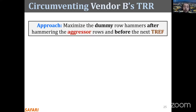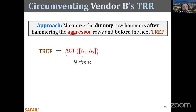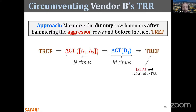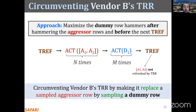To circumvent Vendor B's TRR mechanism, our approach is to maximize the probability of having a dummy row sampled by hammering a dummy row as many times as possible before the next TRR-capable refresh. After a TRR-capable refresh, we start hammering aggressor rows A1 and A2 for double-sided rowhammer. Then we hammer a dummy row many times so these dummy activations overwrite the previously sampled row — which potentially includes A1 or A2. The more we hammer the dummy rows, the higher the probability that a dummy row is sampled and targeted by the following TRR-capable refresh, leaving A1 and A2 unprotected.